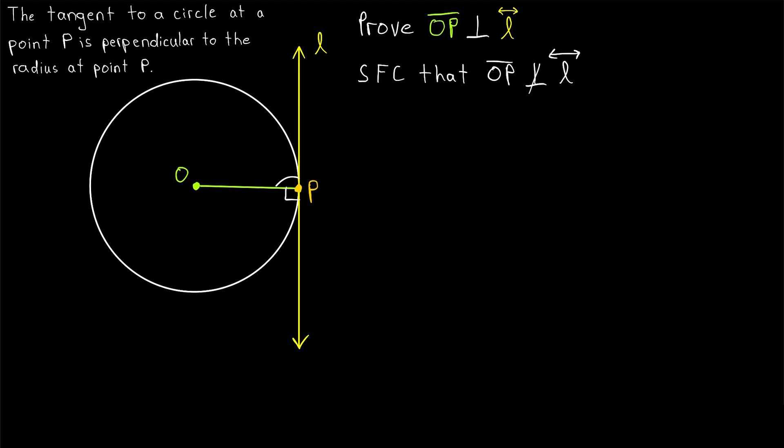Remember, we're trying to prove this is a right angle, but of course we don't know that. But if we assume for contradiction that it isn't a right angle, well, there must be some other point on this tangent line L so that the segment from O to that point is perpendicular to the tangent. Once more, the segment from O to P is not perpendicular to the tangent line, so there must exist some other point on the tangent line, say Q, such that the segment from O to Q is perpendicular to the tangent line.